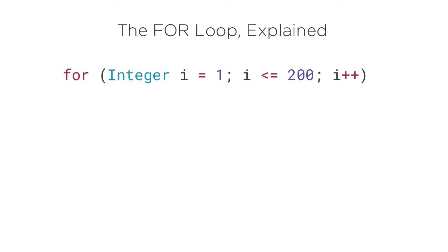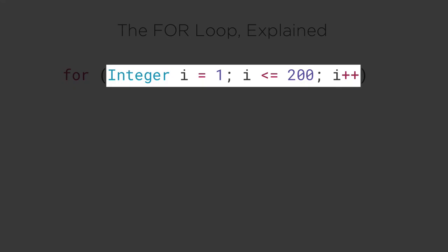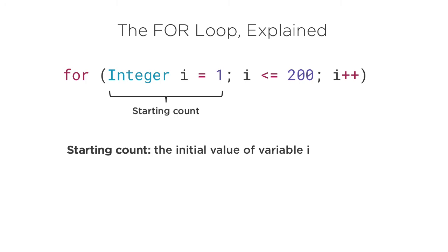Here's how that works. Of course, you start with the for and open and close parentheses. Inside the parentheses, there are three sections separated by semicolons. In the first section, you're actually creating a variable.